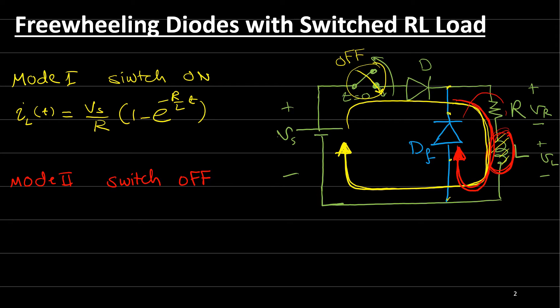Now for mode 2, when the switch is off or open circuit, the freewheeling diode will be a short circuit and the voltage across the load is equal to zero. So the voltage across the load equals L·di/dt — the voltage on the inductor — plus the voltage on the resistor, which is R times iL, where iL is the inductor current.